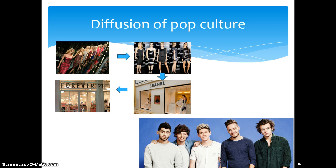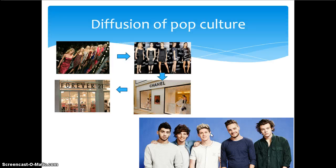The first thing we talk about is origins. Folk cultures have anonymous origins — they come from small, homogenous groups. Popular culture comes from large, heterogeneous groups and diffuses at a rapid pace through hierarchical diffusion — from a person or place of influence, then diffusing down like a triangle. You can see this with fashion going from runways to fashion models to high-end stores to mainstream stores. A group like One Direction is a great example: it spread rapidly, starting from a TV show and diffusing down.